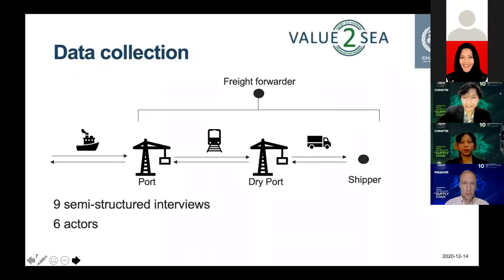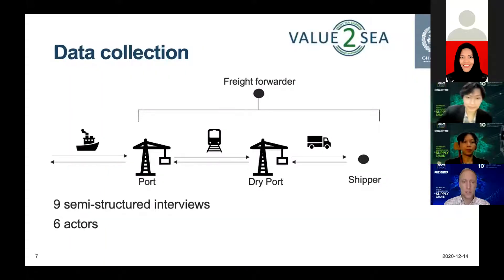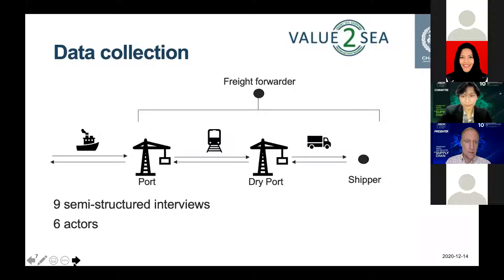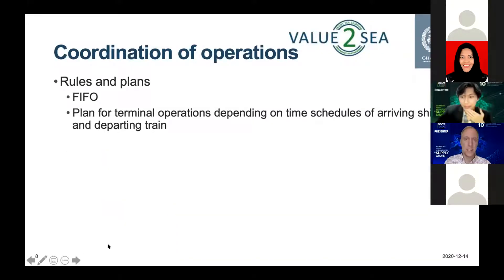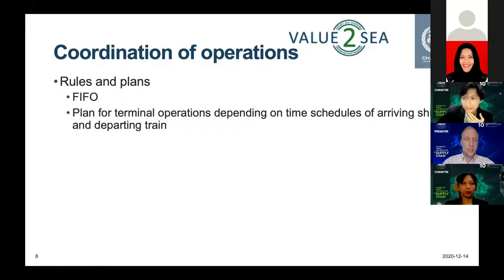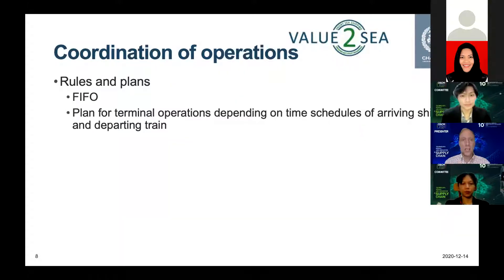We collected data from a hinterland transport chain where containers flow through a port, then transport is made by rail to a dry port where they are unloaded and loaded onto trucks sent out to the shipper. We conducted nine semi-structured interviews with six of the involved actors. To give a brief overview of the coordination we found: at the higher level of the framework, rules and plans are in place — for example, first-in-first-out concepts at the dry port, and plans depending on ship arrival and departing train schedules.